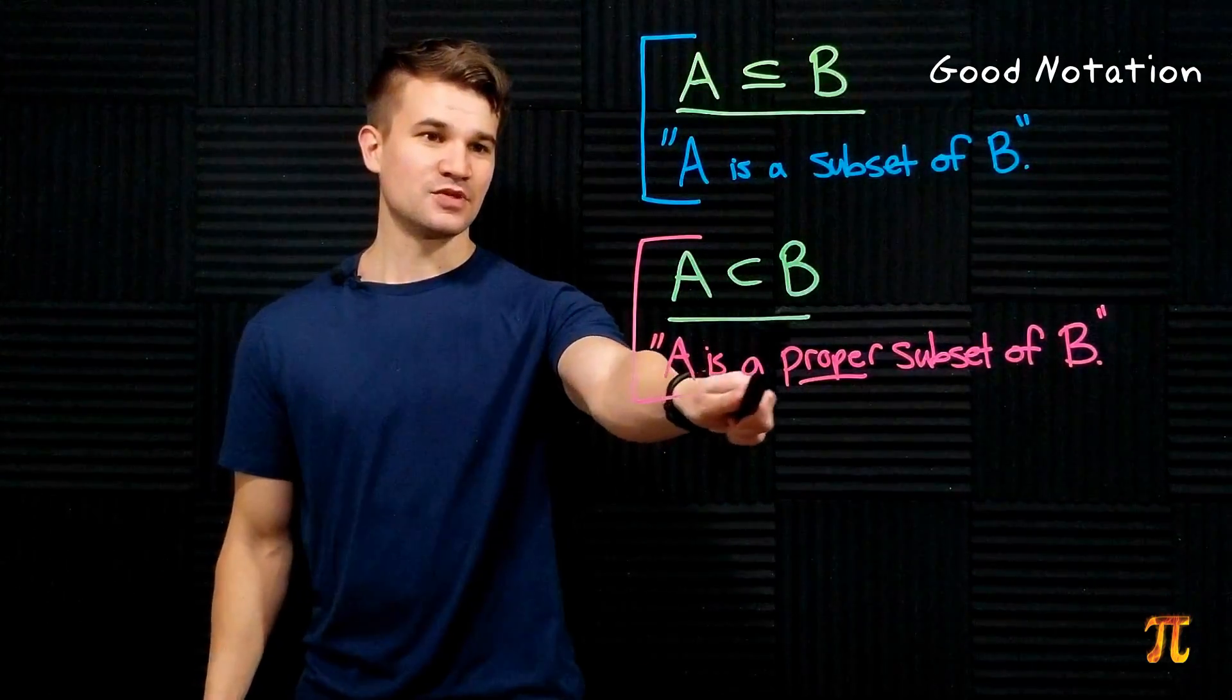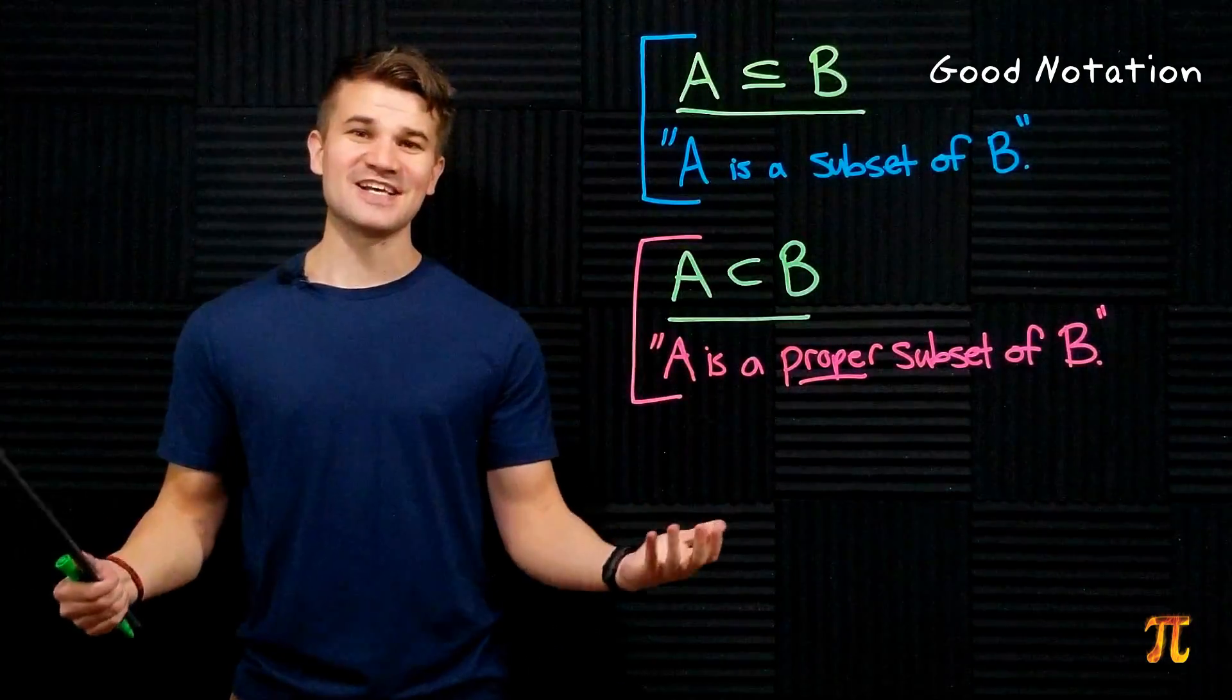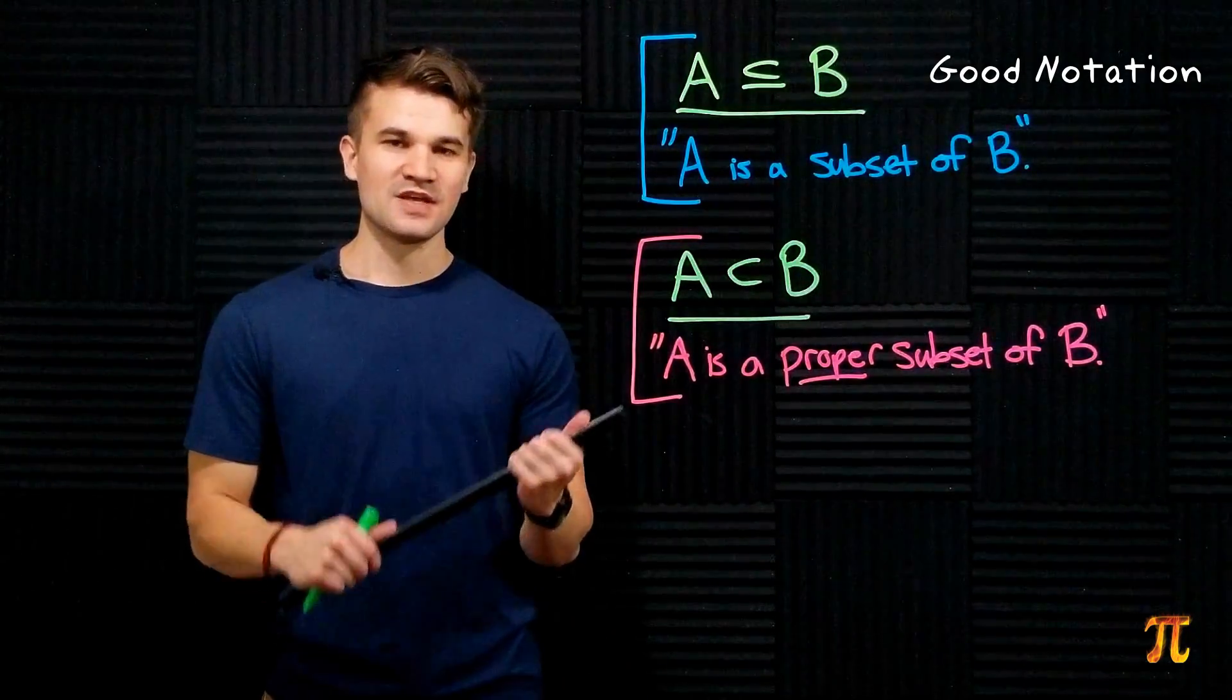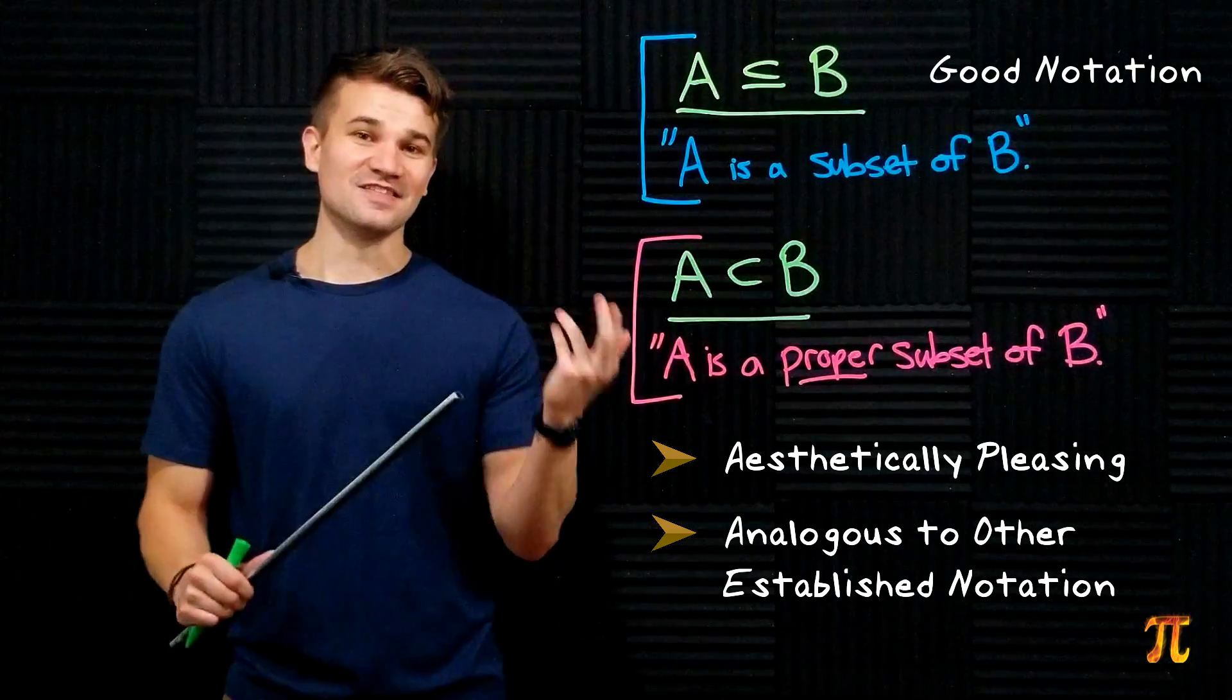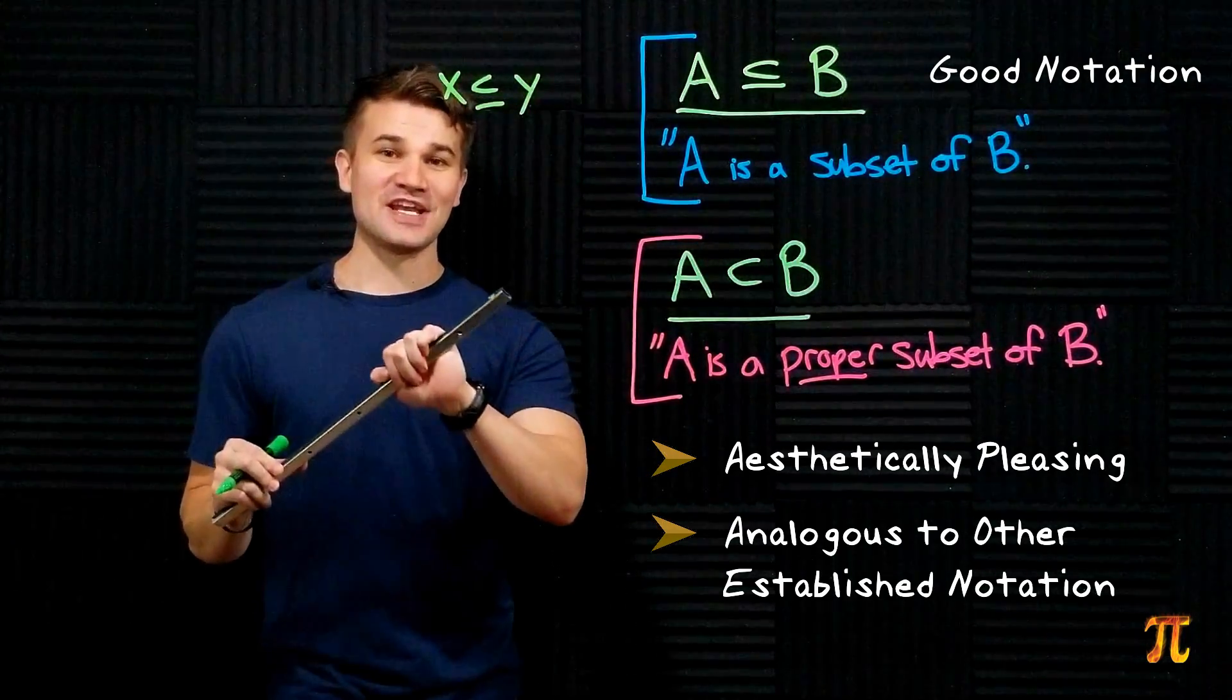This is good intuitive notation and it even forms a nice analogy with less than and less than or equal to notation. If we have two numbers X and Y and X is less than or equal to Y, you write this. On the other hand, if X is strictly less than Y, in other words X is less than Y and X is not equal to Y, we write this.